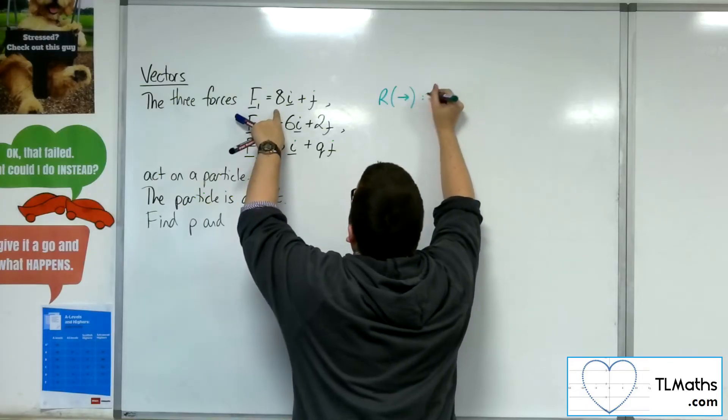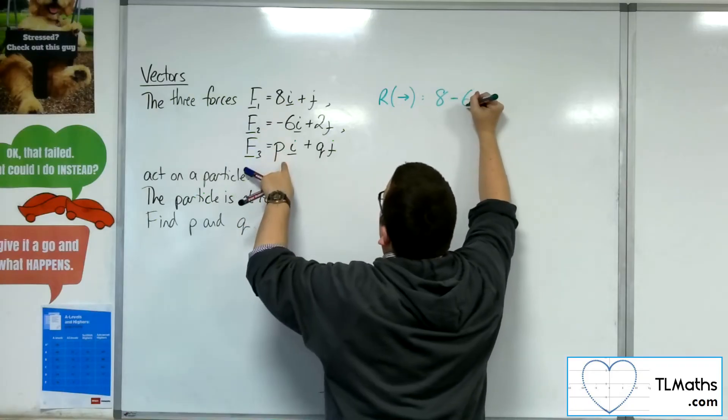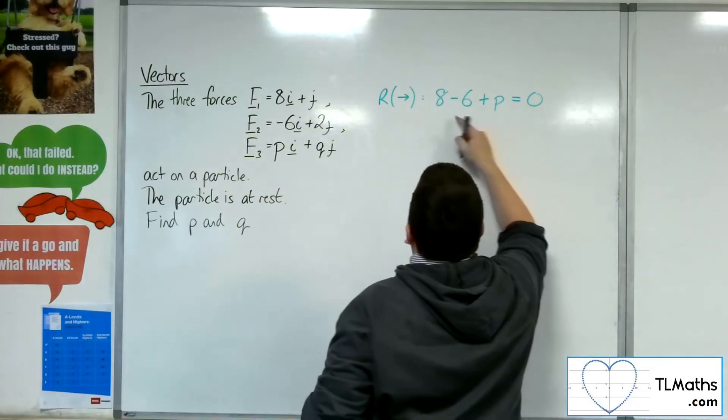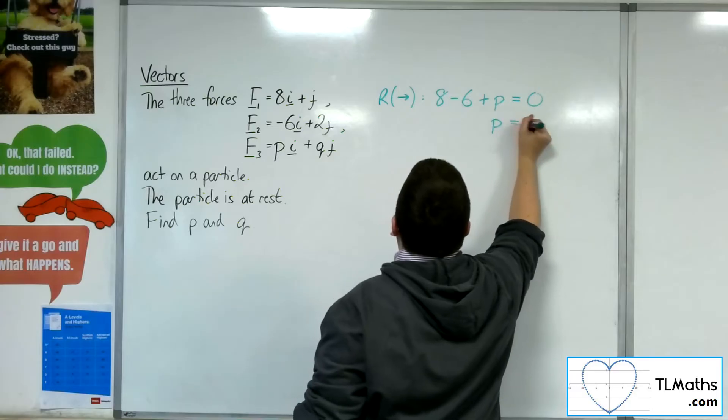then I've got 8 take away 6 plus p, and they must add up to 0. So 8 take away 6 is 2, so that means that p must be minus 2.